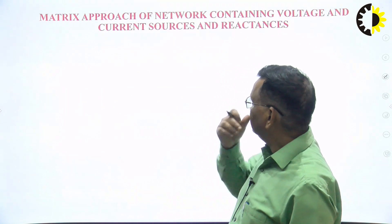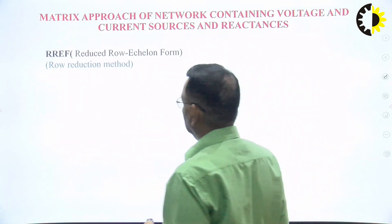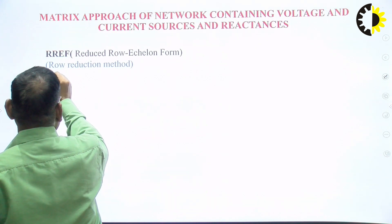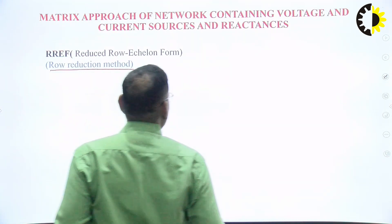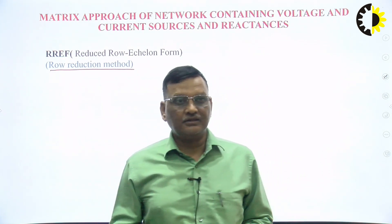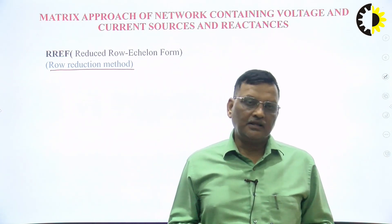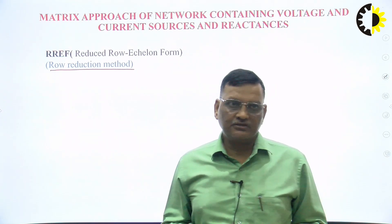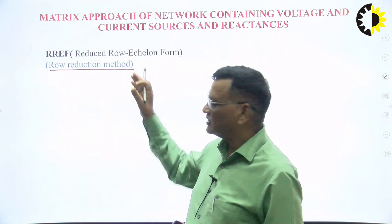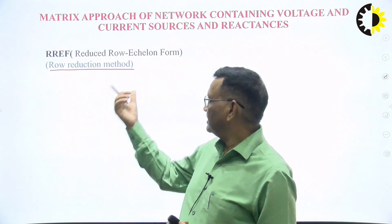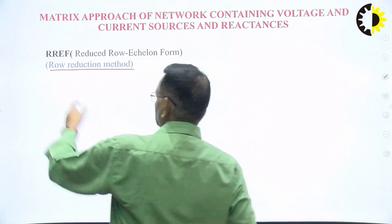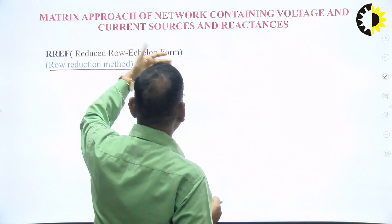Basically this is the row reduction method. In this, we apply some laws to write linear equations, and then those linear equations are written in matrix form. In the matrix we carry out row operations — the row reduction method — to get the reduced row echelon form.